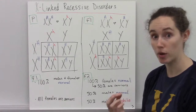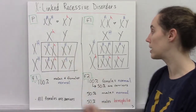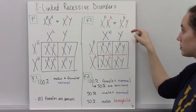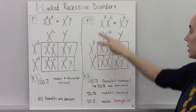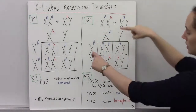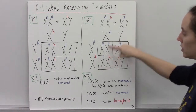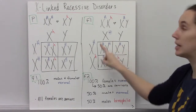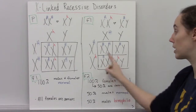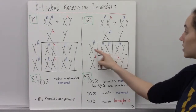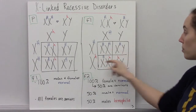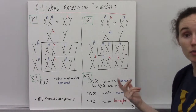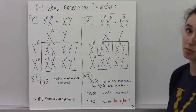If we bred a heterozygous female from the F1 generation with a normal male, we do our Punnett square and you can see that all of the females are normal — one is homozygous for normal, and one is heterozygous and normal. Whereas the males, since they get their X from their mother, 50% have the normal allele and the other 50% have the recessive hemophilia allele.